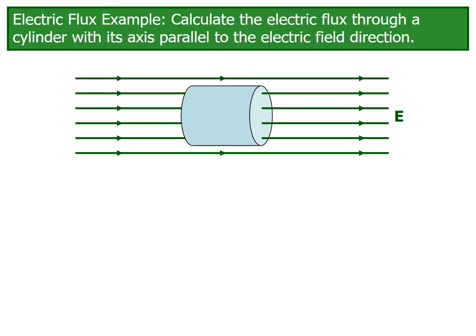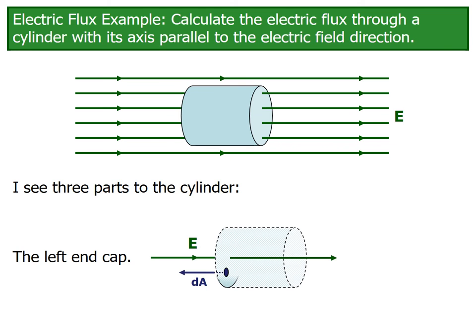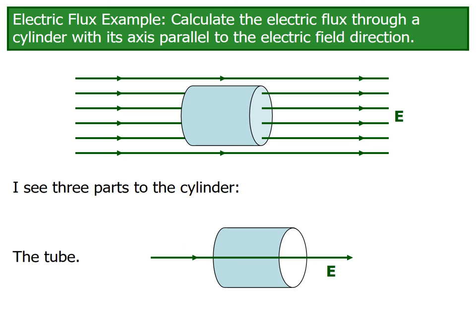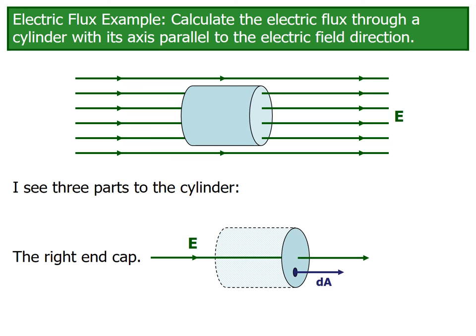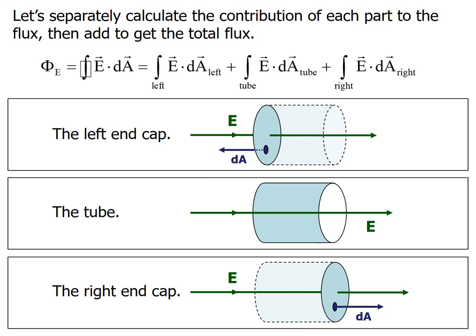Let's look at the example: finding electric flux through a cylinder with its axis parallel to the electric field lines. We can see three parts: the left cap, where electric field lines enter and the area vector points outward; the curved tube surface, which is the third area; and the right cap. We separate the contribution of each part to the total flux and then add them up.